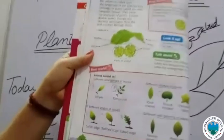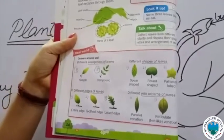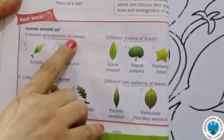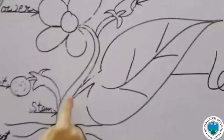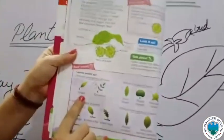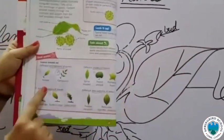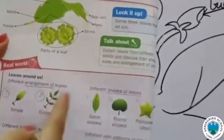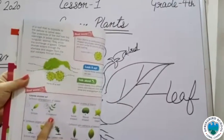Next topic: the shapes of the leaves. First, let's look at the different arrangements of leaves. If you see a plant where one single leaf is attached to the main stem, that is called a simple leaf. But if many leaves are attached to a single stem in a divided arrangement, those are called compound leaves.